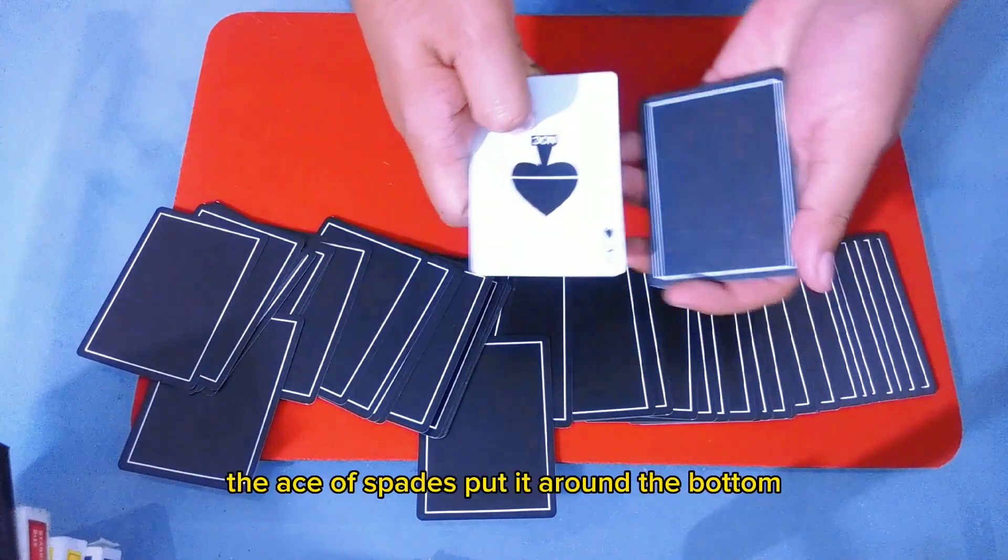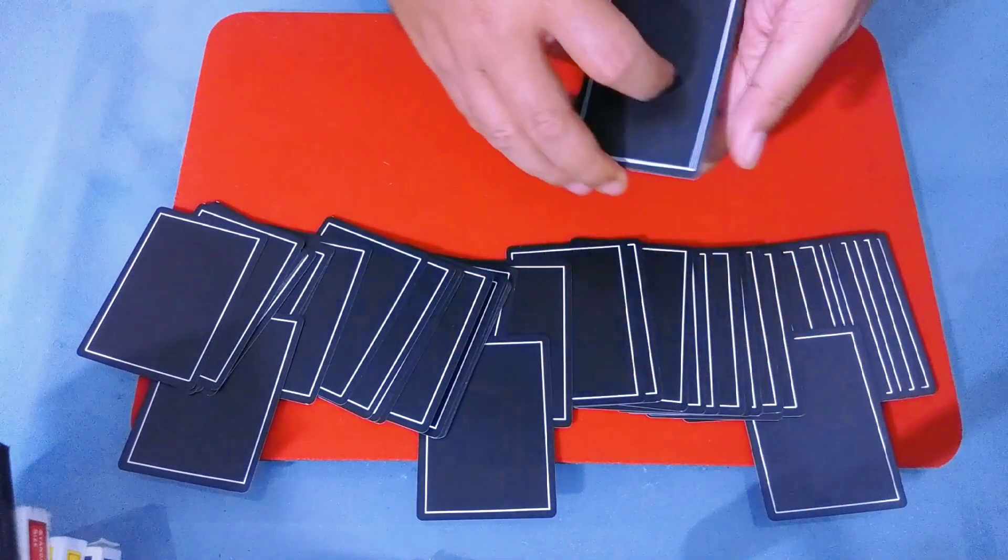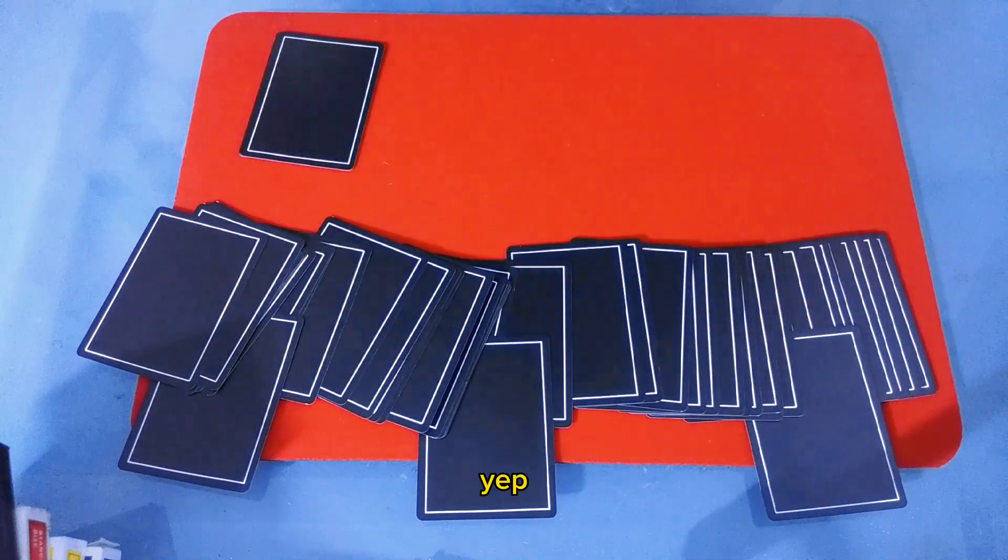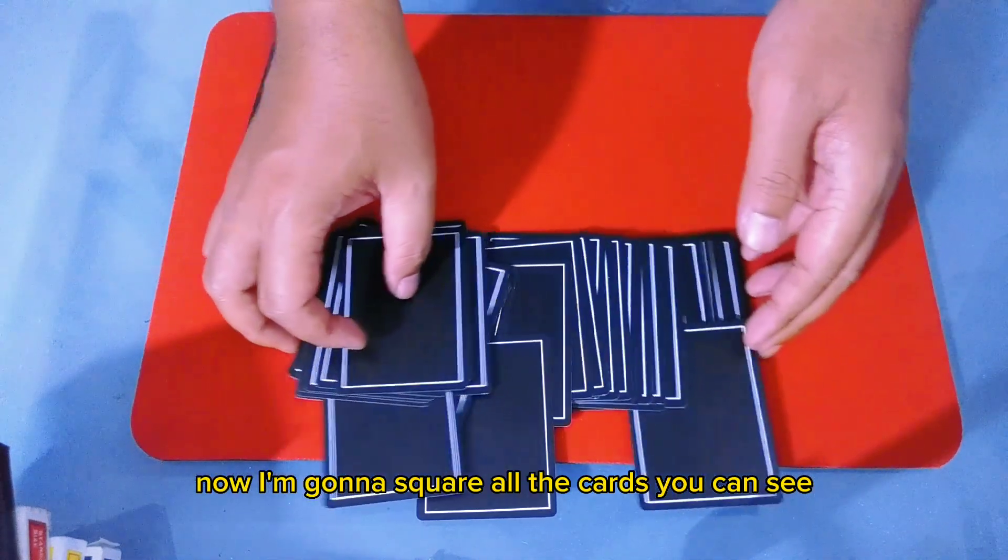The Ace of Spades - put it around the bottom. Now I'm gonna square all the cards, you can see.